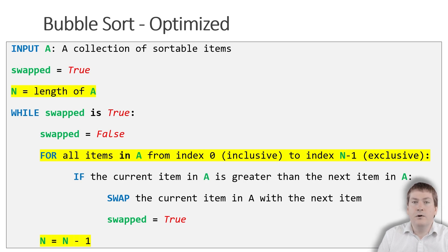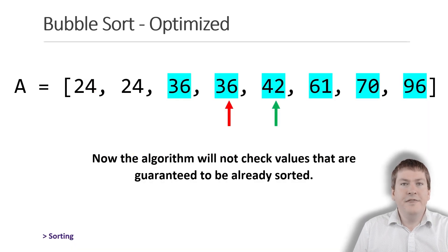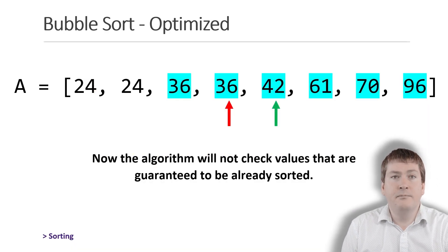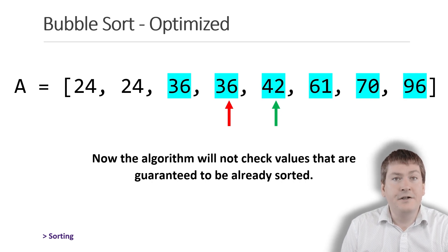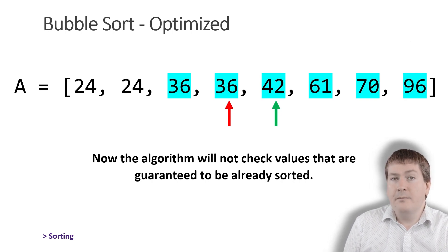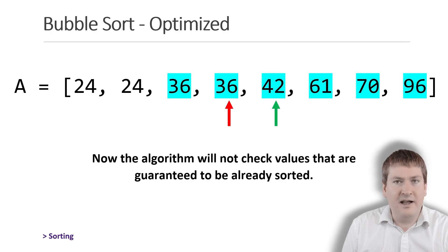This means each time we loop through one less value of the list, because we know that one more value is in the correct order. The first time the for loop runs, it will compare all the values. Then all but the last item. Then all but the last two items. Then all but the last three items, and so on until everything is sorted. The optimized version of bubble sort will not check the values that are already guaranteed to be sorted. Both optimized and unoptimized versions will sort the list correctly — the optimized version just does it a bit faster.